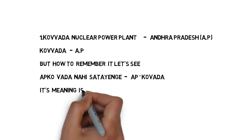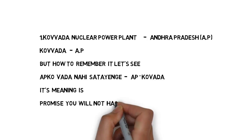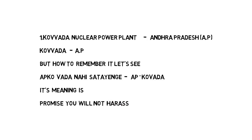Now I am going to use these two keywords — Kovada and AP — and make a meaningful sentence to remember. Here is the sentence: 'Aapko vada nahi satayenge.' In this sentence you can see AP and Kovada: AP for Andhra Pradesh, Kovada for Kovada nuclear power plant.